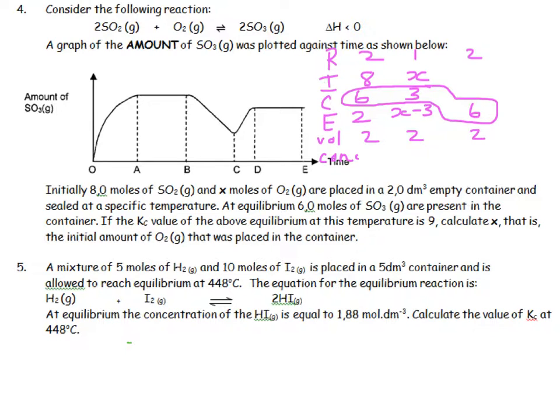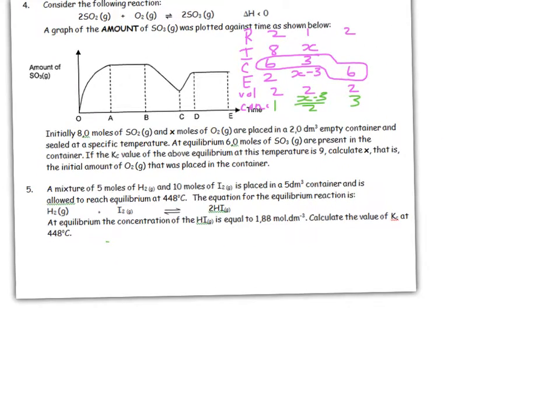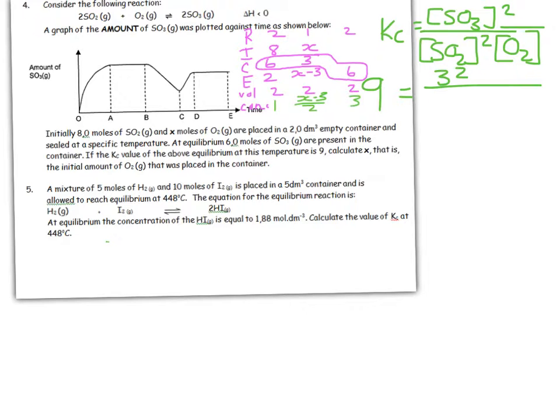I'm going to work out these concentrations: 2 over 2 is 1, 6 over 2 is 3, and this is (x-3) over 2. Kc equals concentration of products SO3 raised to the power of the coefficient divided by concentration of reactants raised to the coefficient.